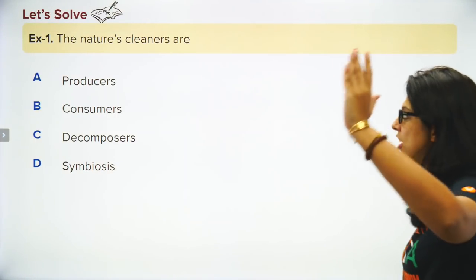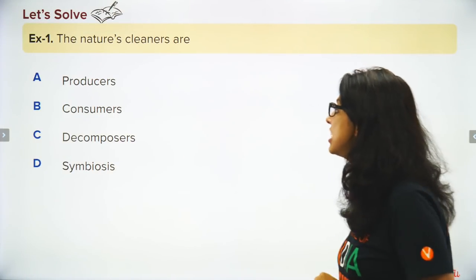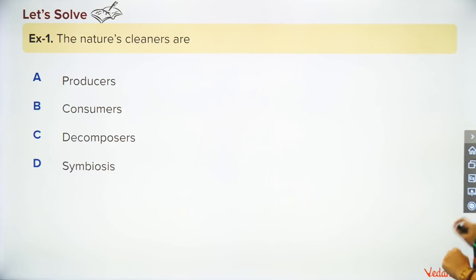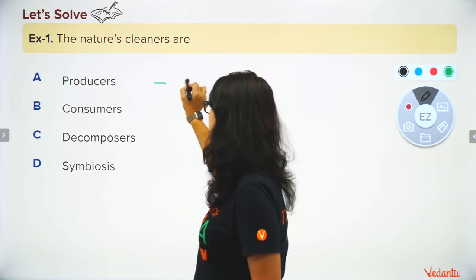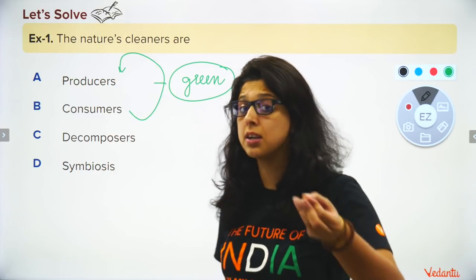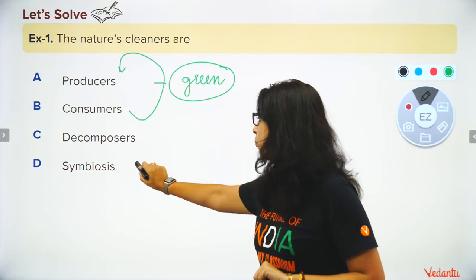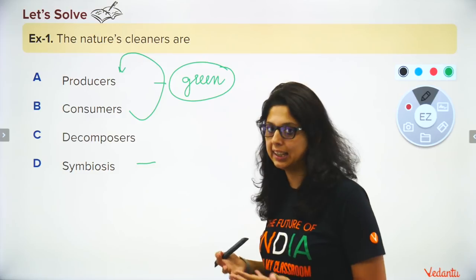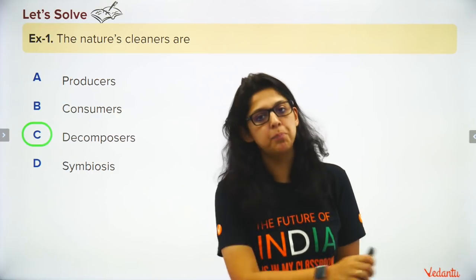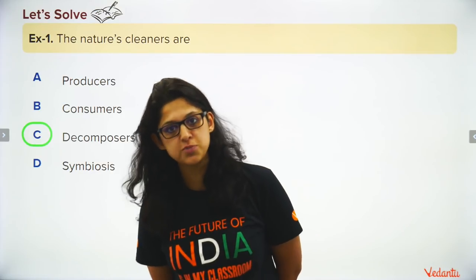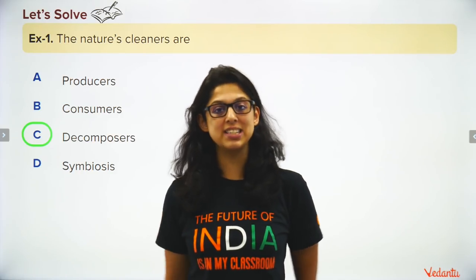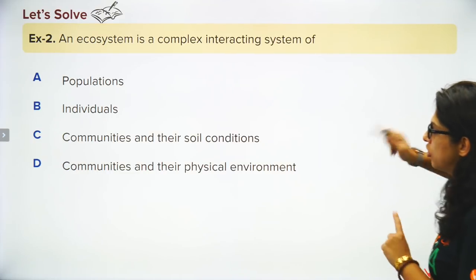Question one: who are nature's cleaners? The organisms that clean up debris in nature — those are the decomposers. Decomposers depend on dead and decaying organisms, decompose the nutrients, and keep the cycle flowing.